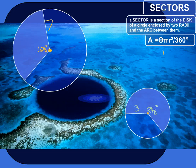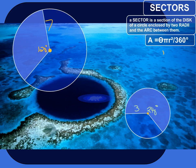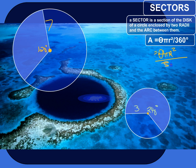Let's calculate the area of two sectors of two different circles. The formula for the area of a sector of a circle is theta, which is the central angle of the sector, times pi r squared, which is the area of the circle, over 360 degrees. So we can rewrite it as theta pi r squared over 360 degrees.